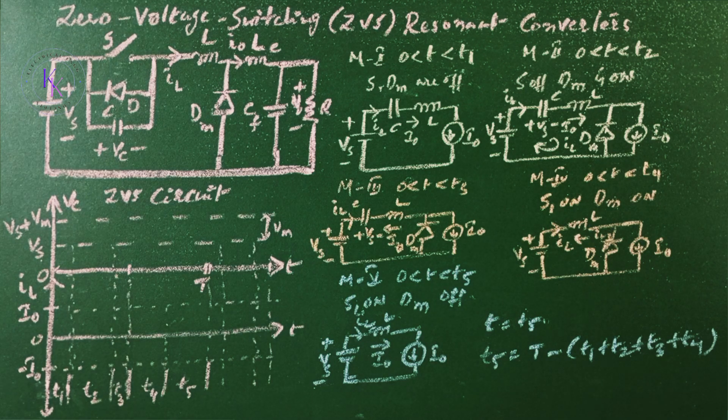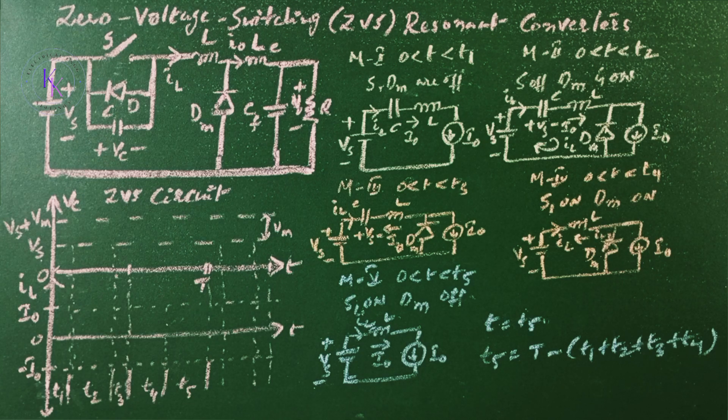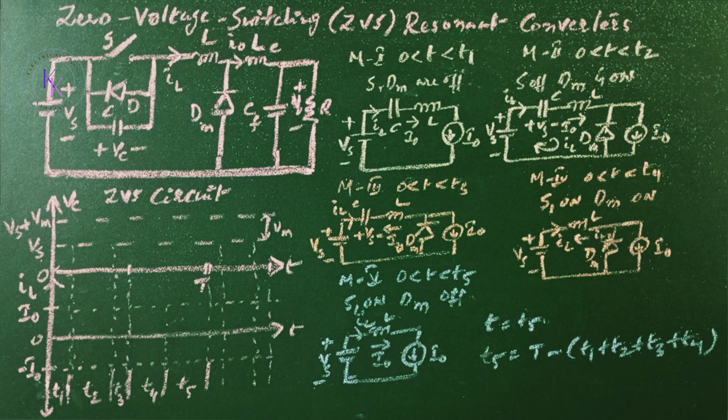The switch must be turned on only at zero voltage, otherwise the energy stored in the capacitor C will be dissipated in the switch. To avoid this situation, the anti-parallel diode D1 must conduct before turning on the switch.